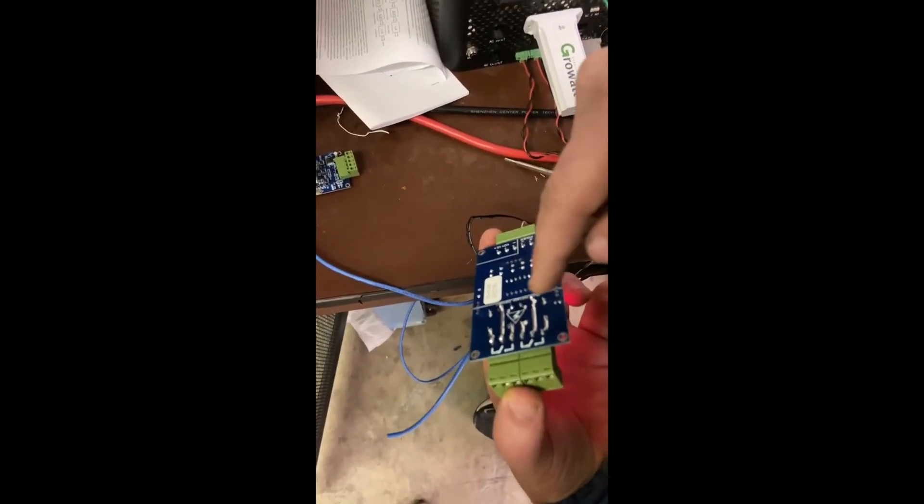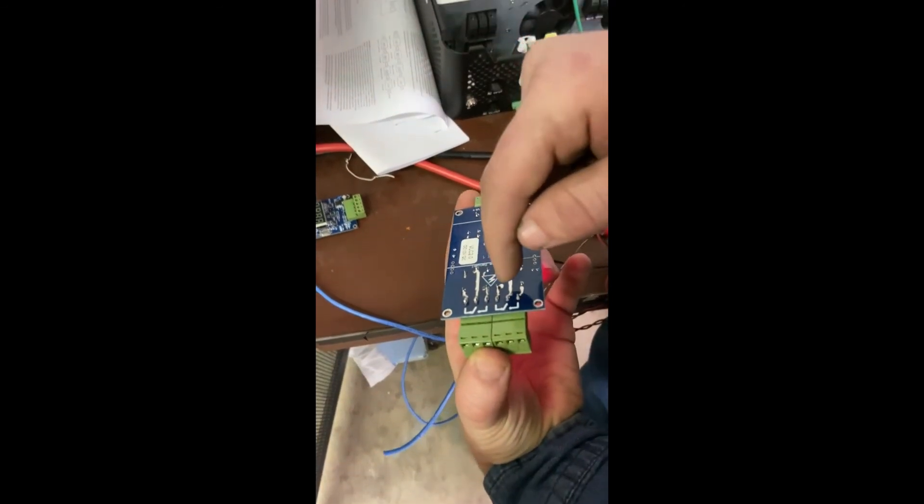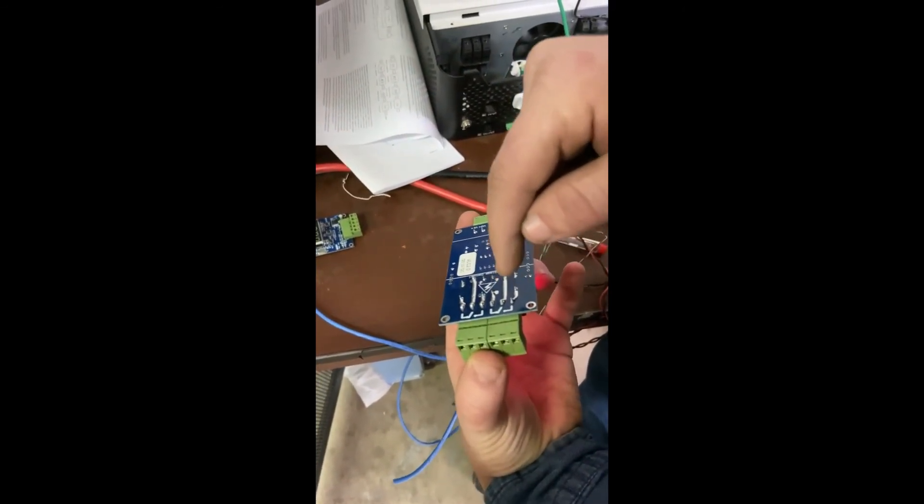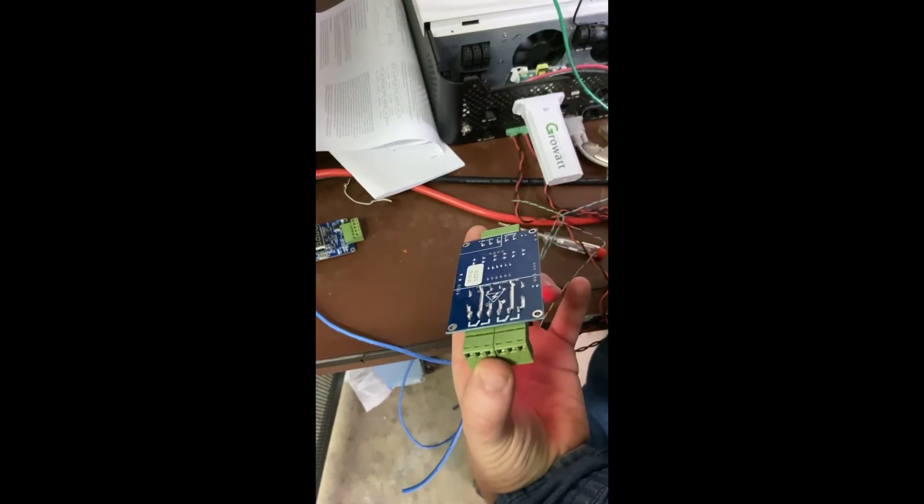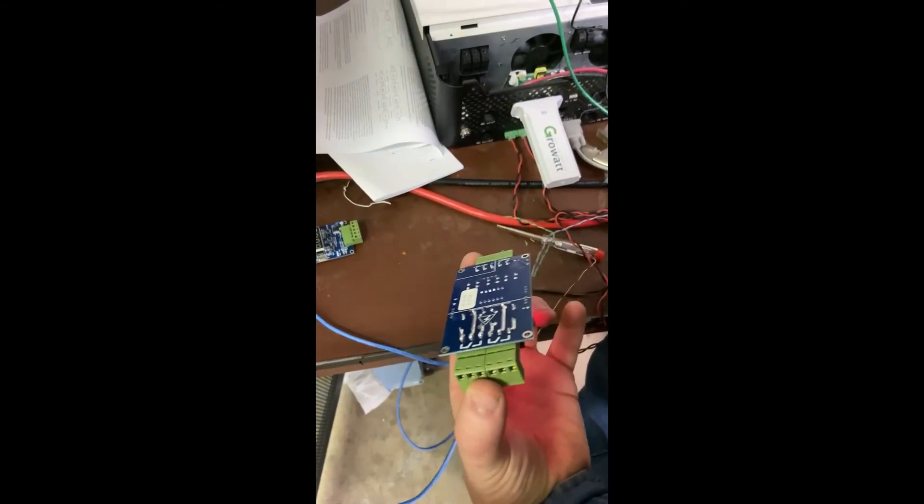Now this relay right here, if you see, it has a normally closed and a normally open. Your double throw relays are normally closed relays.